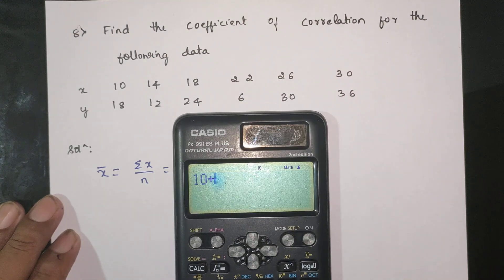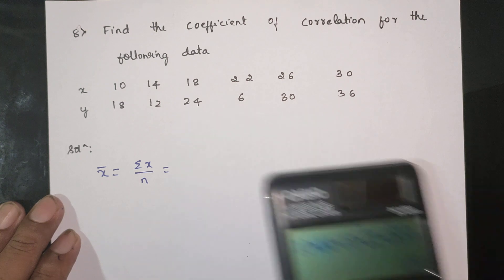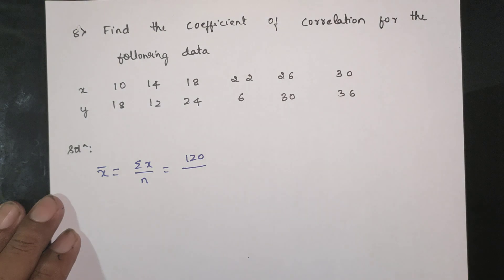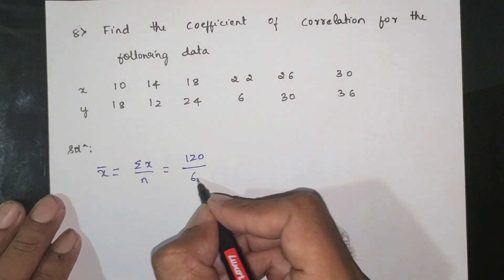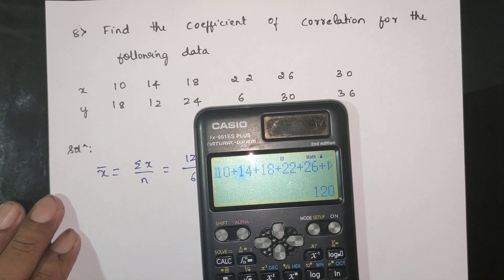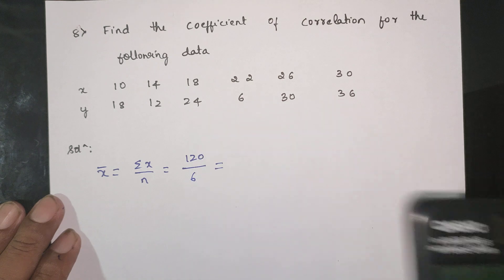10 plus 14 plus 18 plus 22 plus 26 plus 30. This gives 120. So 120 divided by 6 equals 20. Therefore x-bar equals 20.